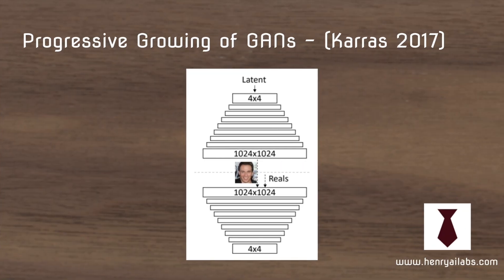Following this is Progressive Growing of GANs, a really interesting paper that became popular because it showed how you could generate high-resolution celebrity faces — an unprecedented result that some people couldn't believe were completely generated by deep learning models. The idea is to decompose the high-resolution problem into lower-resolution substructures, exploiting the correlation between a 1024x1024 image and its downsampled counterpart. They progressively fade in layers and use tricks such as a mini-batch standard deviation layer, equalized learning rate, and pixel-wise feature normalization.